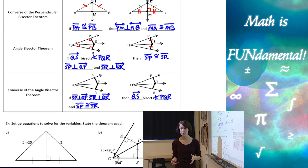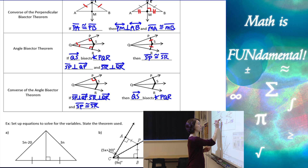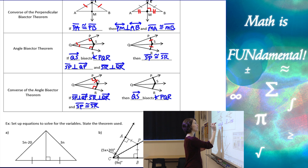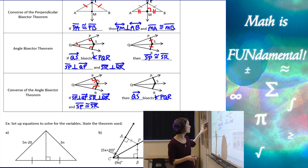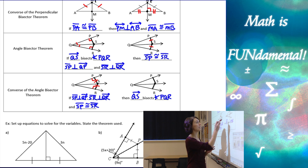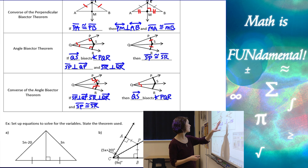And then if we flip that around, the converse of the angle bisector theorem says if we have SP perpendicular to ray QP, and SR perpendicular to ray QR, and we know that segment SP is congruent to segment SR — if we're given all of that information — then we can use the converse of the angle bisector theorem to state that angle PQR must be bisected by ray QS.